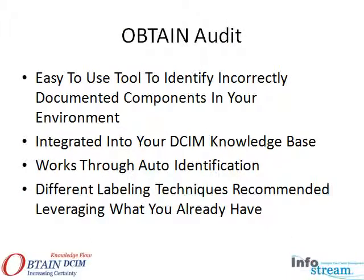In review, the Obtain Audit Feature is an easy-to-use tool which is part of your standard Obtain DCIM tool package. Its purpose is to ensure your knowledge base reflects the true state of your environment. It is possible to use this feature without auto-identification; however, that would mean typing in cabinet names and asset names during the audit, which takes up valuable time and introduces the possibility of transcription errors that reduce the value of the audit. Once the environment is set up with auto-identification, the collection process is so quick and easy it can be completed by anyone on your staff. The best method to set up your environment should depend on how your organization manages assets today and should leverage what you've already accomplished.